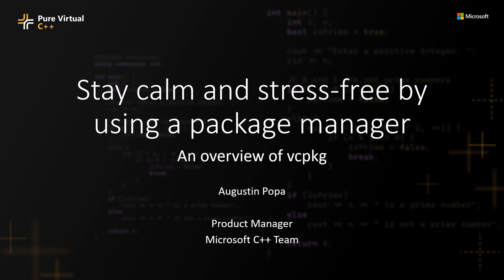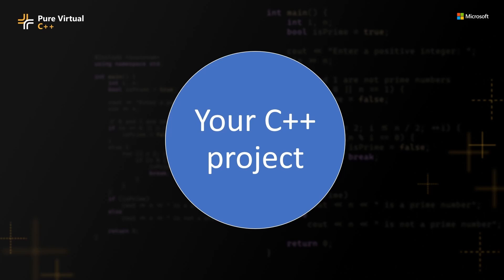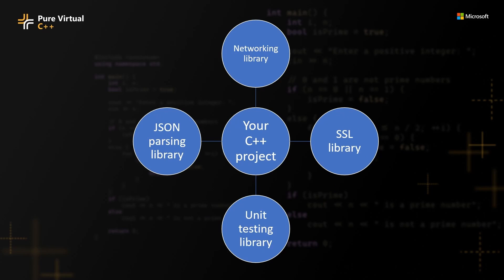So you need to write some C++ code — maybe you need to parse JSON, establish a connection to a server, or just write some unit tests. Unfortunately, the C++ standard library doesn't have what you're looking for. Well, no need to write this logic from scratch. There are thousands of open source C++ libraries out there. You just need to find them and somehow get them working with your project. The trouble is, C++ libraries are not very easy to work with. There are a couple of challenges you don't typically see in other programming languages.